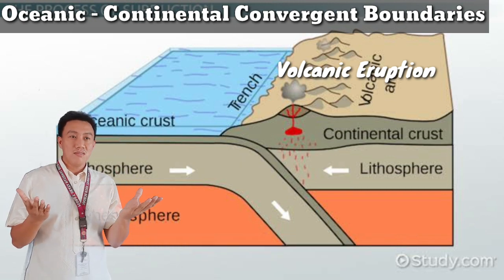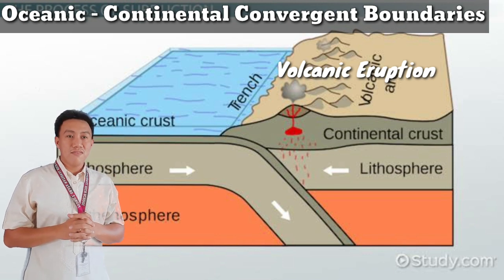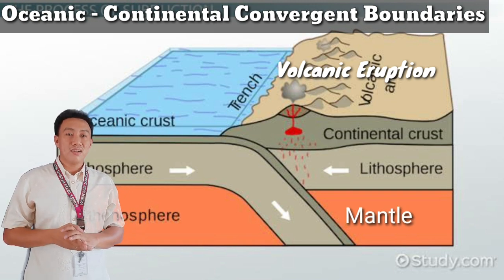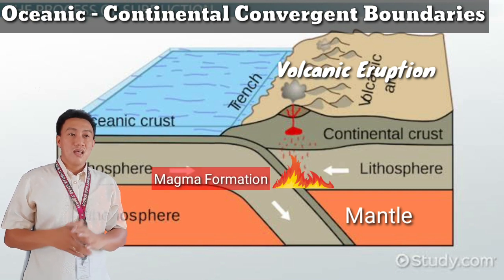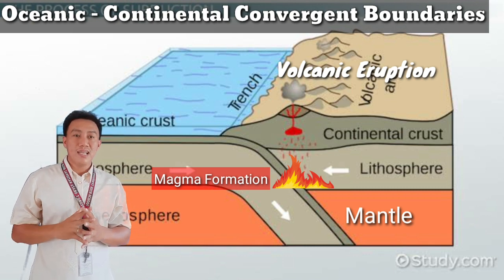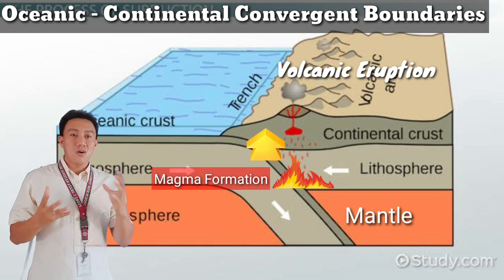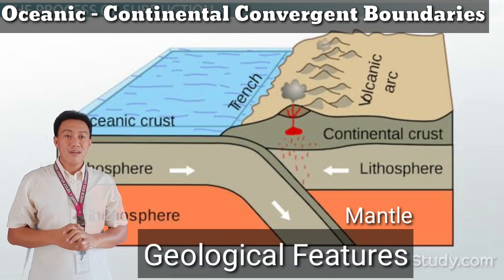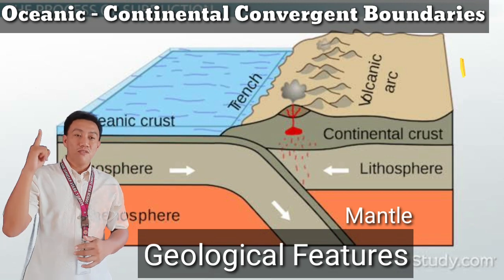Why volcanic eruption? Because the subducted lithosphere bends toward the mantle. Since the mantle is hotter, the subducted lithosphere melts, forming magma. Addition of volatile materials such as water causes the magma to become less dense, allowing it to rise and reach the crust, causing volcanic eruption. The geological features that may form are a trench, which develops because of the subduction, and a volcanic arc.